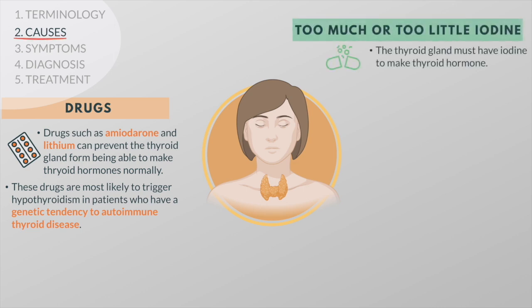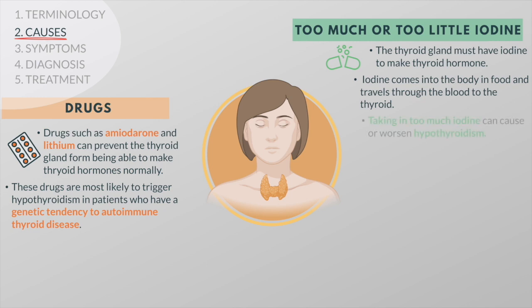The thyroid gland must have iodine to make thyroid hormone. Iodine comes into the body in food and travels through the blood to the thyroid. Keeping thyroid hormone production in balance requires the right amount of iodine. Taking in too much iodine can cause or worsen hypothyroidism.